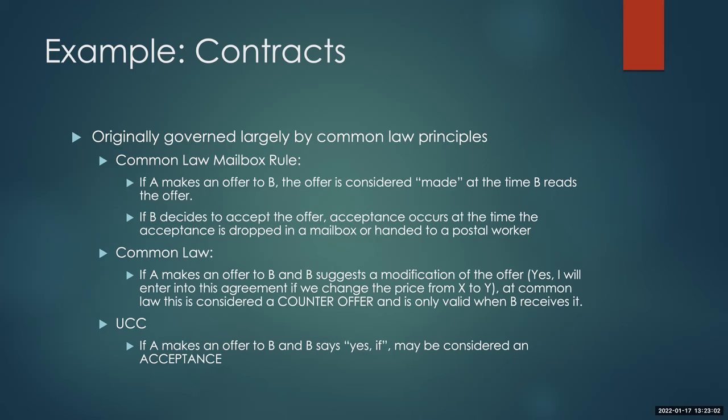In the United States, there is something called the Uniform Commercial Code, which governs commercial contracts — contracts for the sale of goods and services. The UCC was a model law that many states have enacted, either in its entirety or with some modifications. Most states have now adopted the Uniform Commercial Code, at least in part. So now we have statutes in every single state that trump common law.